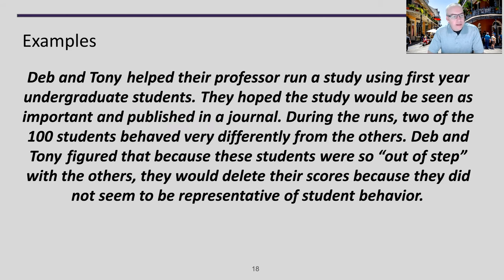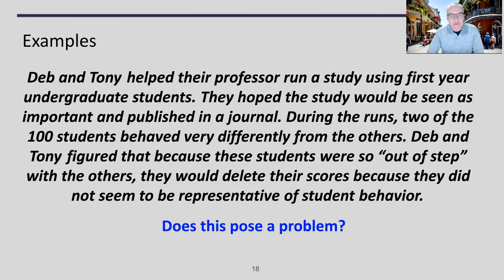Second example: Deb and Tony helped their professor run a study using first-year undergraduate students, hoping it would be publishable. During the study, two of the 100 students behaved very differently from the others. Deb and Tony decided to just delete their scores because they didn't seem representative of the rest. Does this pose a problem? Is this the right way to handle outliers, or is there another approach you would take?